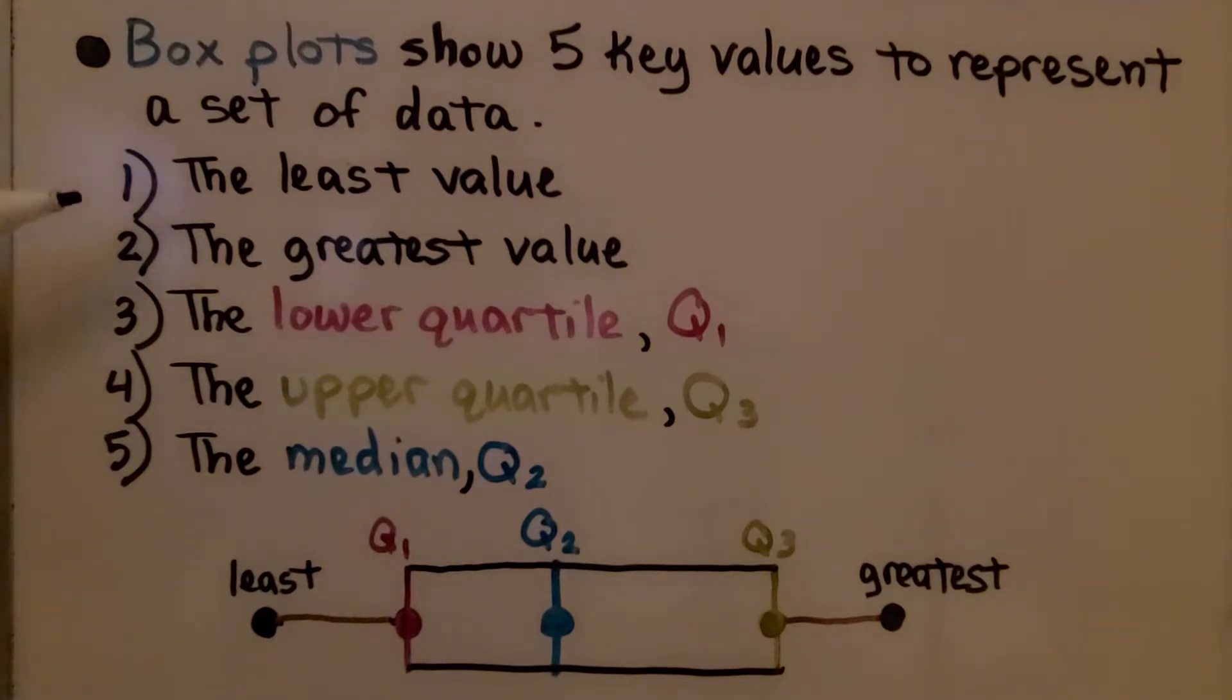It shows the least value, the greatest value, the lower quartile which is Q1, the upper quartile which is Q3, and the median which is Q2.